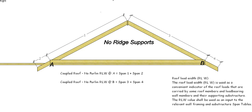So now we move into our coupled roofs. This one has no ridge supports. So to work out the RLW at A it is span 1 plus span 2 which is the overhang, will give us the RLW in this situation. And if we go over to B it's going to be span 3 plus span 4. So that's a coupled roof, no ridge supports.